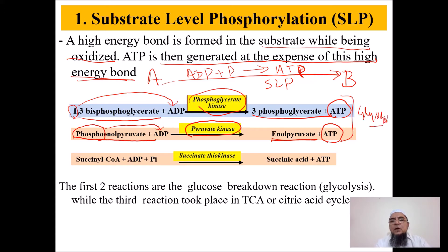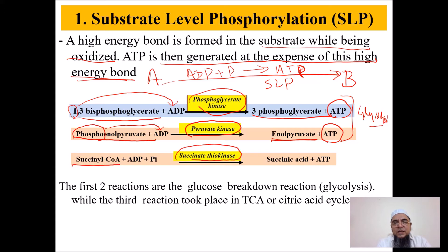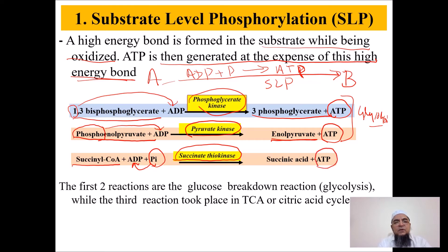The third example is from the citric acid cycle. Succinyl-CoA undergoes a reaction catalyzed by the enzyme succinate thiokinase, which is so energetically favorable that it attaches inorganic phosphate to ADP to make ATP, converting succinyl-CoA into succinic acid. This is a reaction of the TCA cycle, or citric acid cycle.